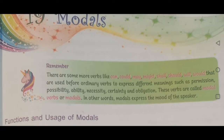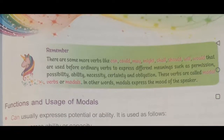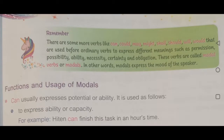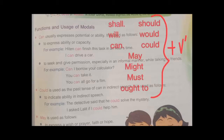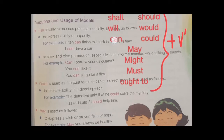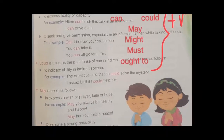The modals are: Can, Could, May, Might, Shall, Should, Will, Would — which are used with ordinary verbs. They express Permission, Possibility, Ability, Necessity, Certainty, or Obligation. Shall is your future, Should is its past; Will is your future, Would is its past; Can is your present, Could is its past; and then May, Might, Must, Ought to.